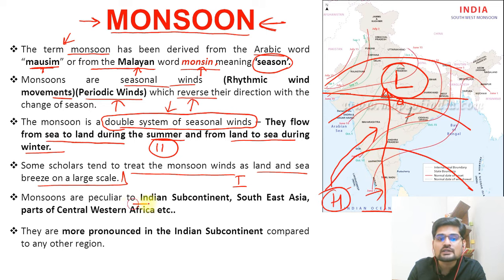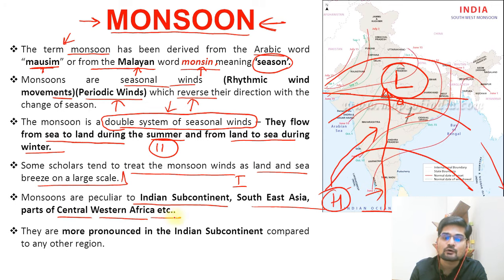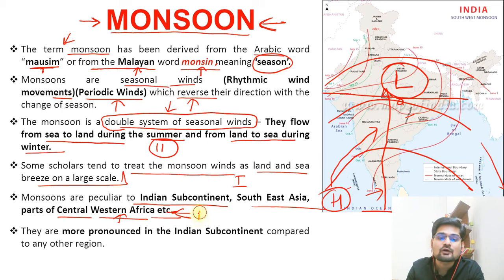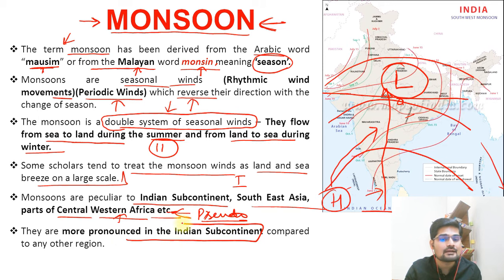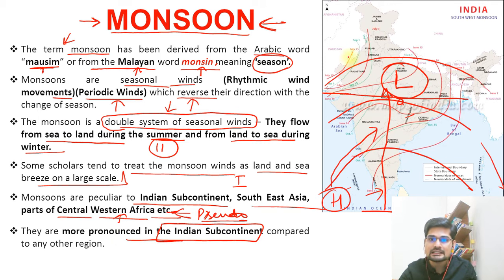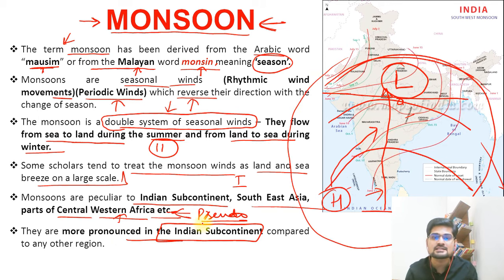Monsoons are peculiar to the Indian subcontinent or Southeast Asia. In some parts of Central and Western Africa this phenomenon also occurs, but there it is called pseudo monsoon — we will discuss that later. For now, understand the basic idea that monsoons are more pronounced in the Indian subcontinent, and it is inherently a part of the Indian subcontinent region that we discuss the concept of monsoon.